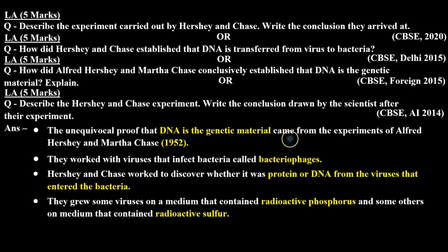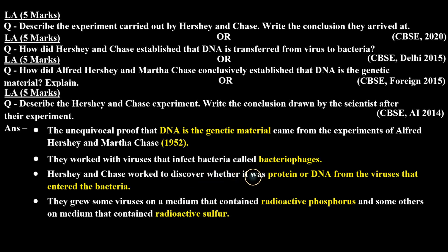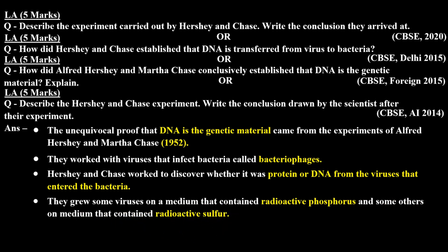The unequivocal proof that DNA is the genetic material came from the experiments of Alfred Hershey and Martha Chase in 1952. They worked with viruses that infect bacteria, called bacteriophages. Hershey and Chase worked to discover whether it was protein or DNA from the viruses that entered the bacteria. They grew some viruses on a medium that contained radioactive phosphorus and some others on a medium that contained radioactive sulfur.